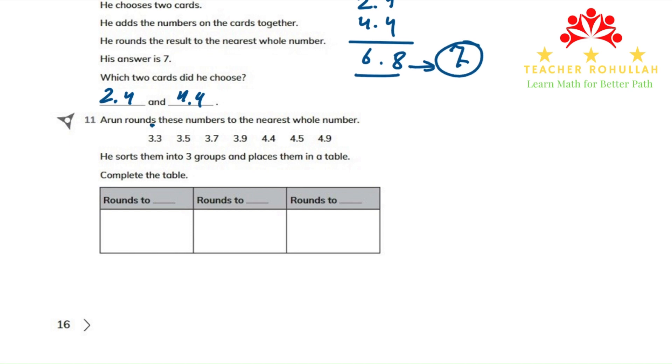3.3 rounds to 3, 3.5 rounds to 4, 3.7 rounds to 4, 3.9 also rounds to 4, 4.4 rounds to 4, 4.5 rounds to 5, and 4.9 also rounds to 5.